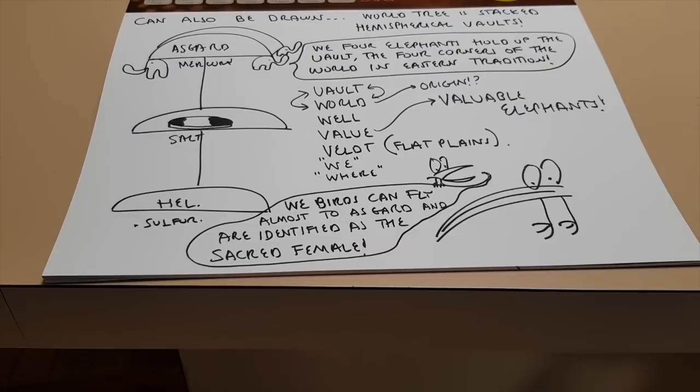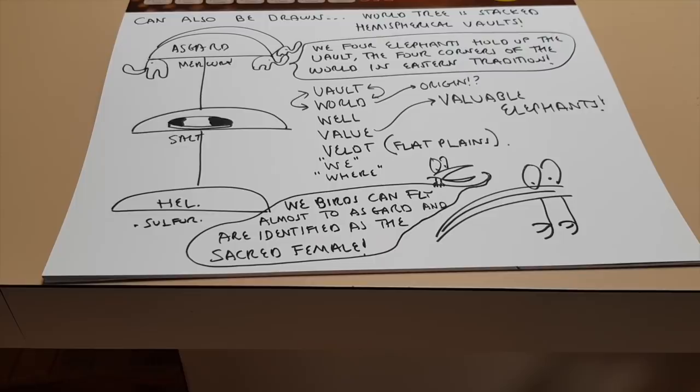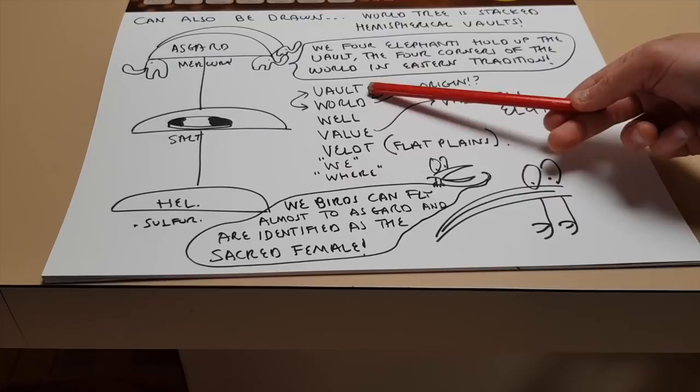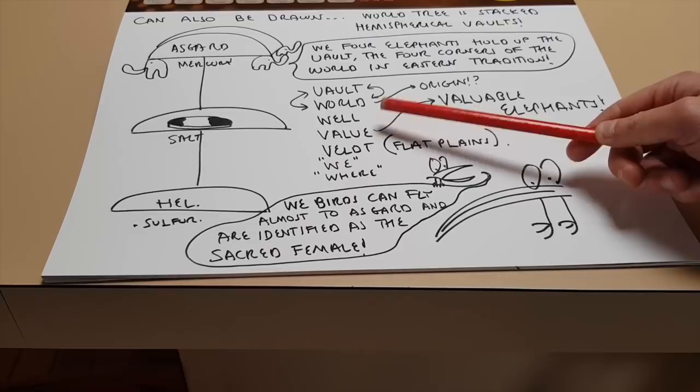So let's look further. This can also be drawn as the World Tree is stacked hemispherical vaults. So that's a tree of the world. Now, here we have the elephants and they're saying something. So the elephants are saying, we four elephants hold up the vault, the four corners of the world in Eastern tradition. And there are some interesting words which are related to vault. Vault and world seem to me to be the same, almost the same word.